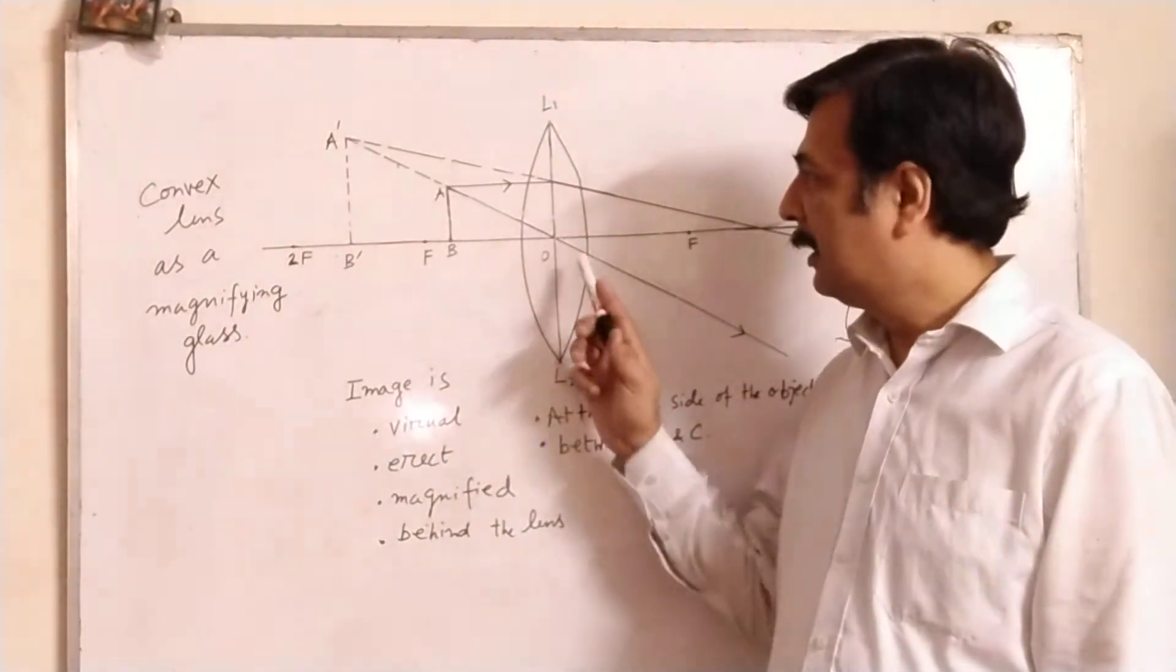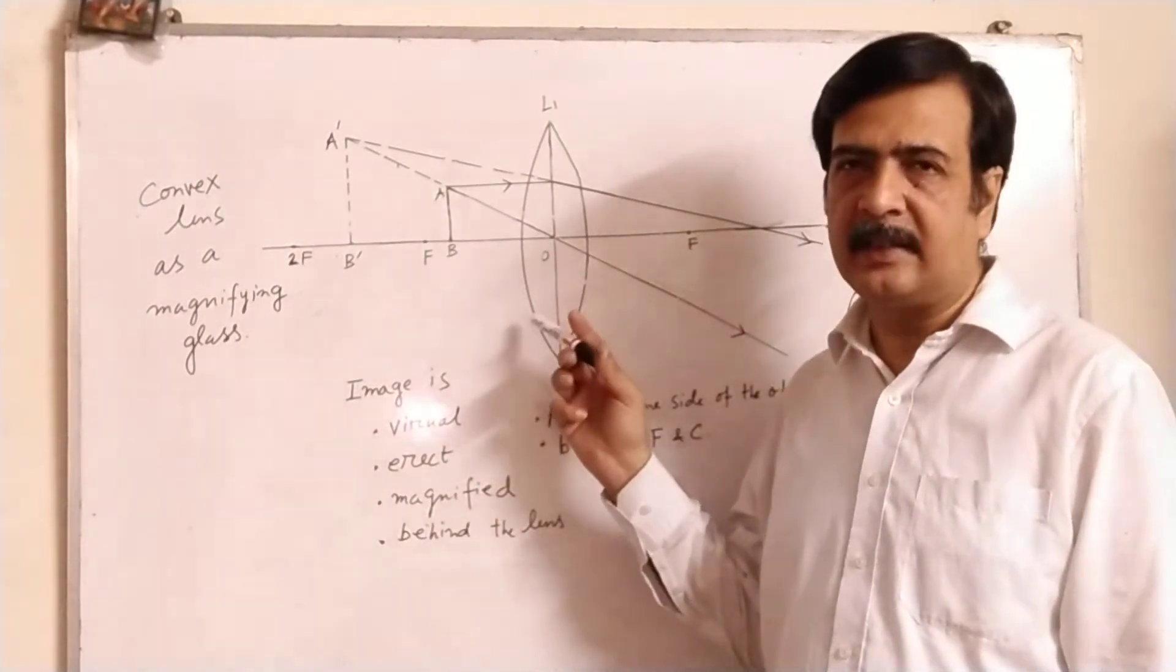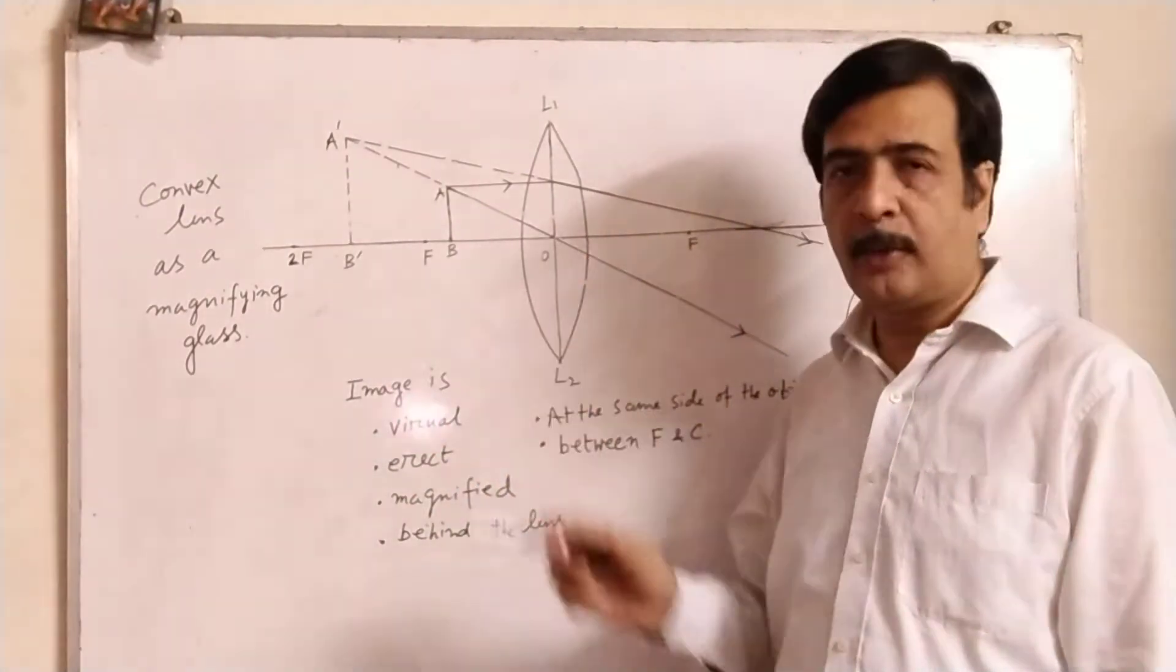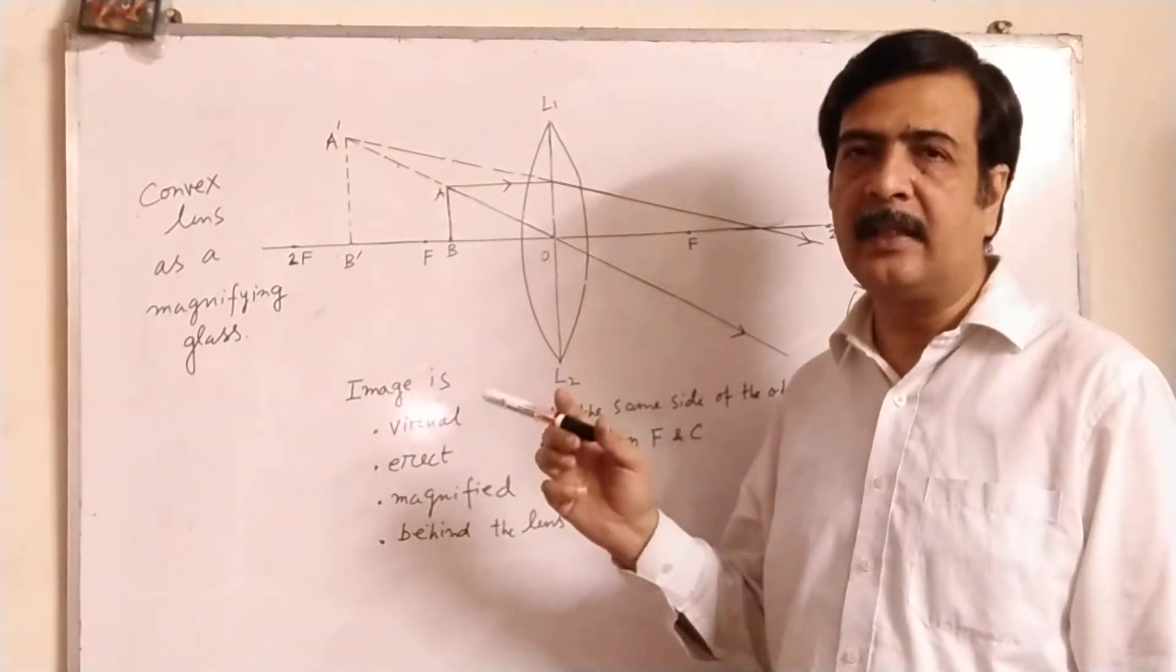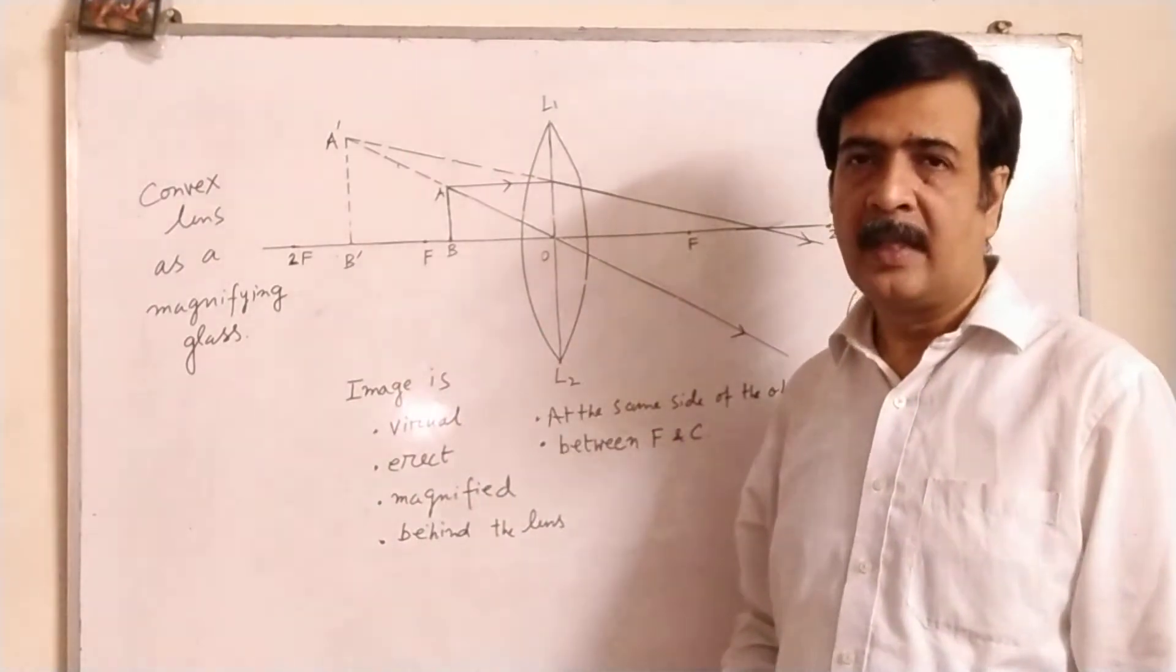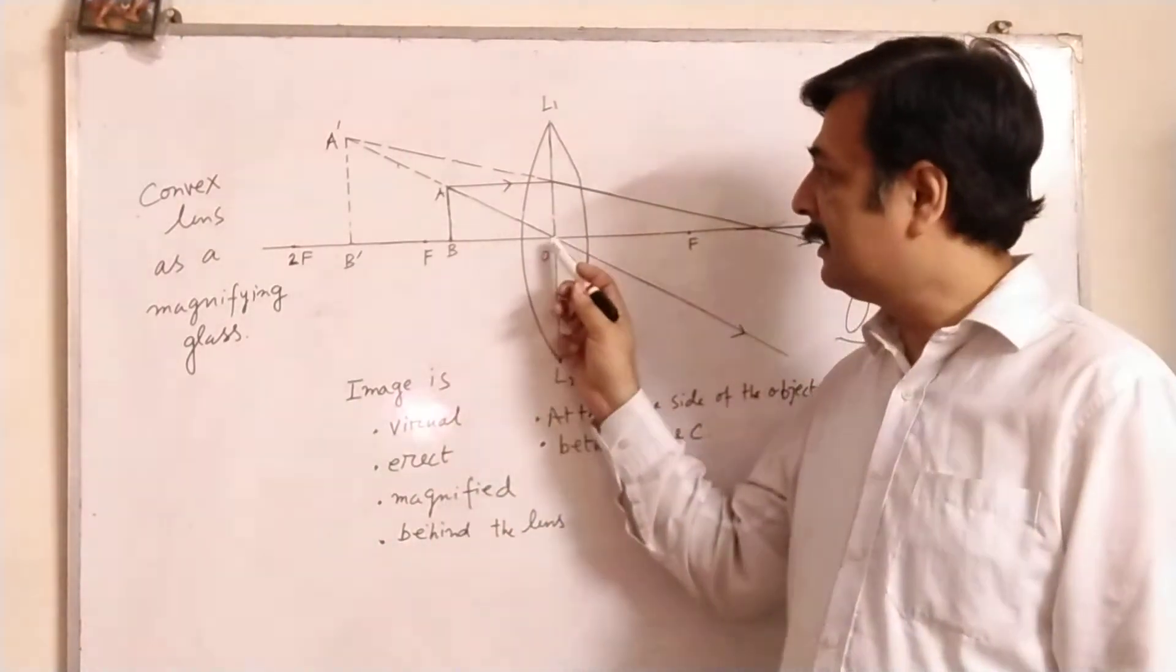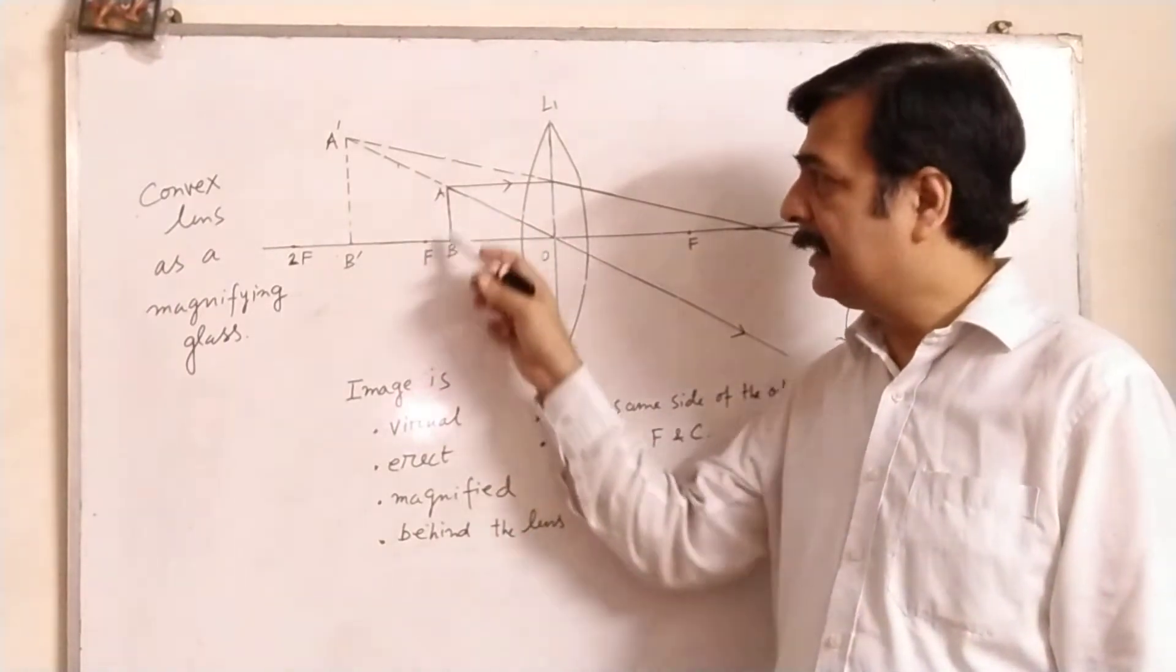So I have drawn here one convex lens. The center, since it is a symmetrical one, the optical center is a central point. We know that optical center is the point through which when a ray is refracted it is not deviated.